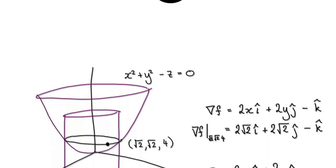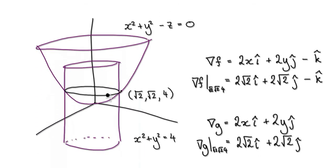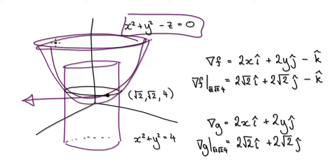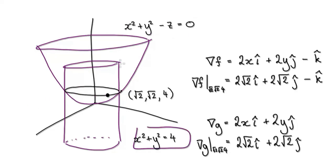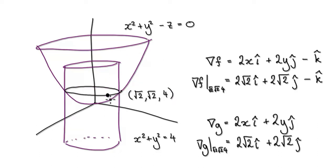In this video, we're going to come up with the parametric equations for the tangent line. You've got your surface — this paraboloid — in 3D space, and then you've got your cylinder in 3D space. Where the two surfaces intersect, they will intersect right here. And at this given point, we are going to come up with the tangent line for this given point.